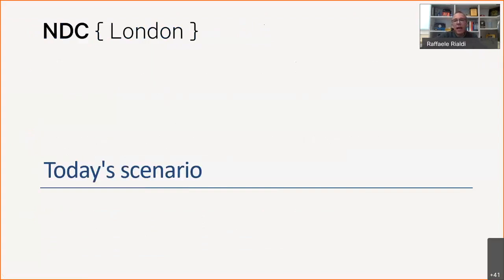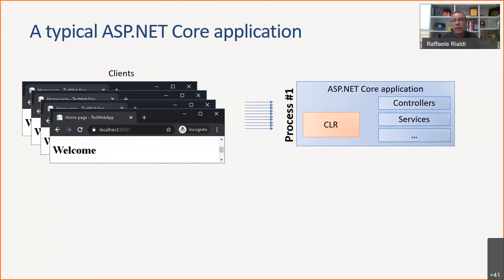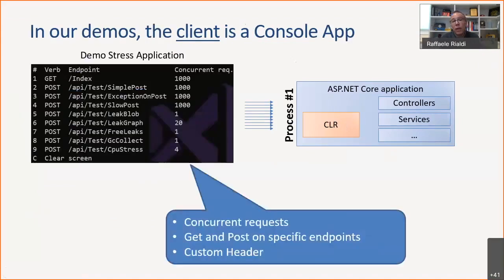Here's our scenario for today — the strange idea. You have an ASP.NET Core application on the right with the CLR, controllers, and services. This is the process we want to investigate, with many clients hitting it. In the demo I replaced the browsers with a stress application — a console app where you can make GET and POST requests to web APIs with a configurable number of concurrent requests. For example, 1000 simultaneous POST requests to create load.